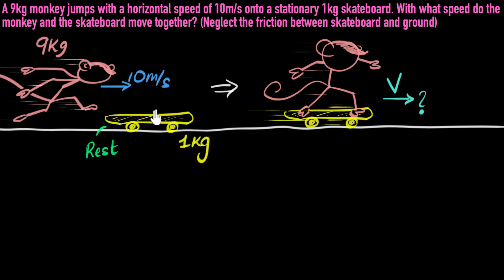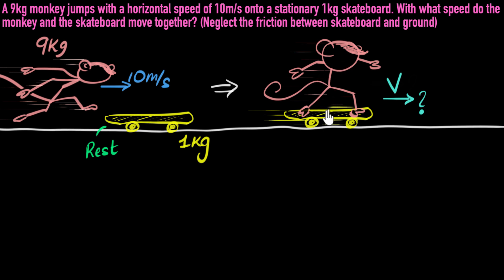Momentum is only conserved provided there are no external forces. If there are other objects besides these two that start pushing on them — say the ground starts pushing on them — then the momentum will not be conserved. That's why it's mentioned in the problem: neglect friction. And if you're wondering about gravity, well, we don't have to worry about gravity because it's being balanced. The gravitational force acting on the monkey downwards is balanced by an upward push given by the skateboard. So the forces cancel out. If we neglect friction, there are no other external forces, and momentum is conserved. If you need more clarity, we've talked about this in a previous video called conservation of momentum, so you can always go back and refer to that.